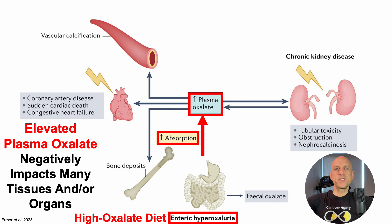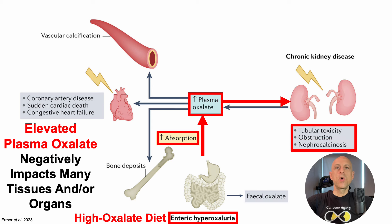Elevated plasma oxalate can then negatively impact tissues, including kidney function, where it induces tubular toxicity, obstruction, and a buildup of calcium inside the kidney, which is known as nephrocalcinosis.